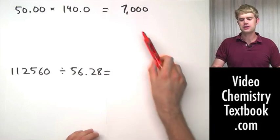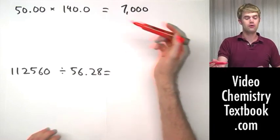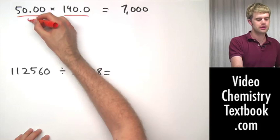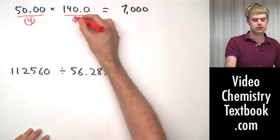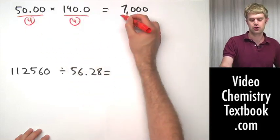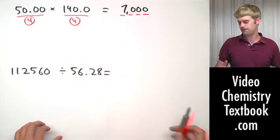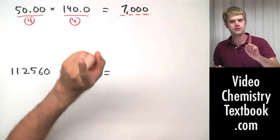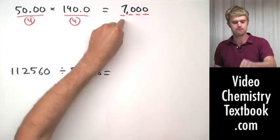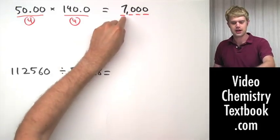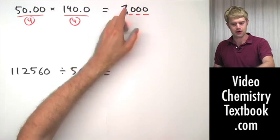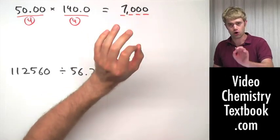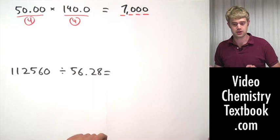How many significant figures should our answer have? There are four significant figures in both of the numbers that we put together. So our final answer should have four significant figures in it. But the way it's written right now, it only has one significant figure — the 7. Because zeros to the right of a non-zero digit are only significant if there's a decimal place in the number.